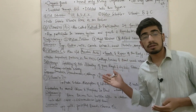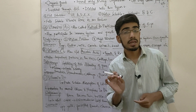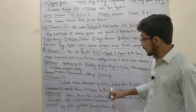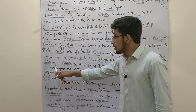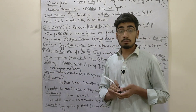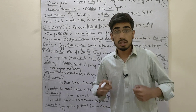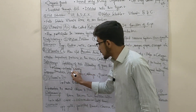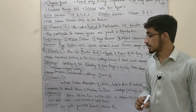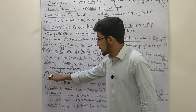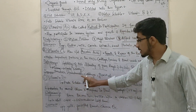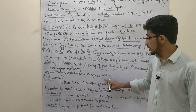Vitamin C helps in wound healing. It is very important that severe deficiency of vitamin C causes the disease scurvy. Sources of vitamin C include tomatoes, strawberries, cabbage, guava, etc.